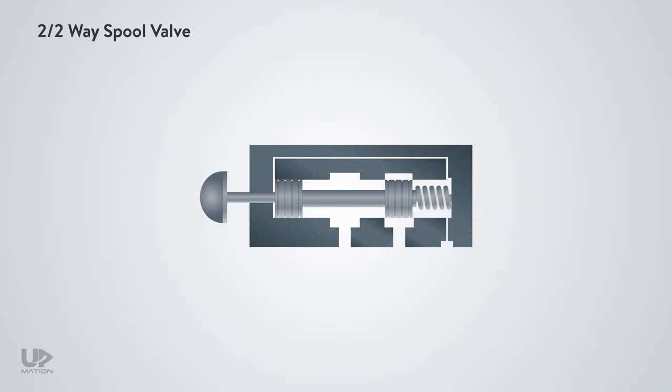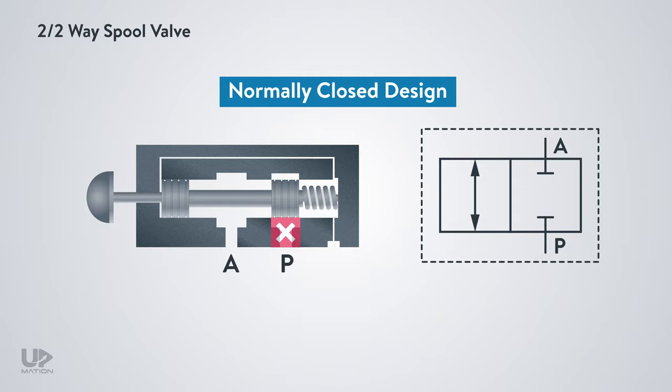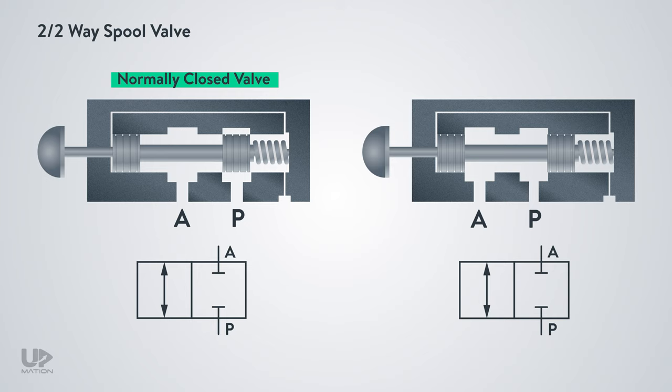For a 2x2-way valve, the valve has 2 ports and 2 spool positions. If in the normal or unactuated position of the valve, the spool blocks the P or power port, we can call it a normally closed 2-way valve with this symbol. But if we change the internal design of the valve in such a way that in the normal position, the P and A ports are connected and the passage toward the actuator is open, then this valve is called a normally open valve. Don't forget to relocate the squares with each other in the symbol.